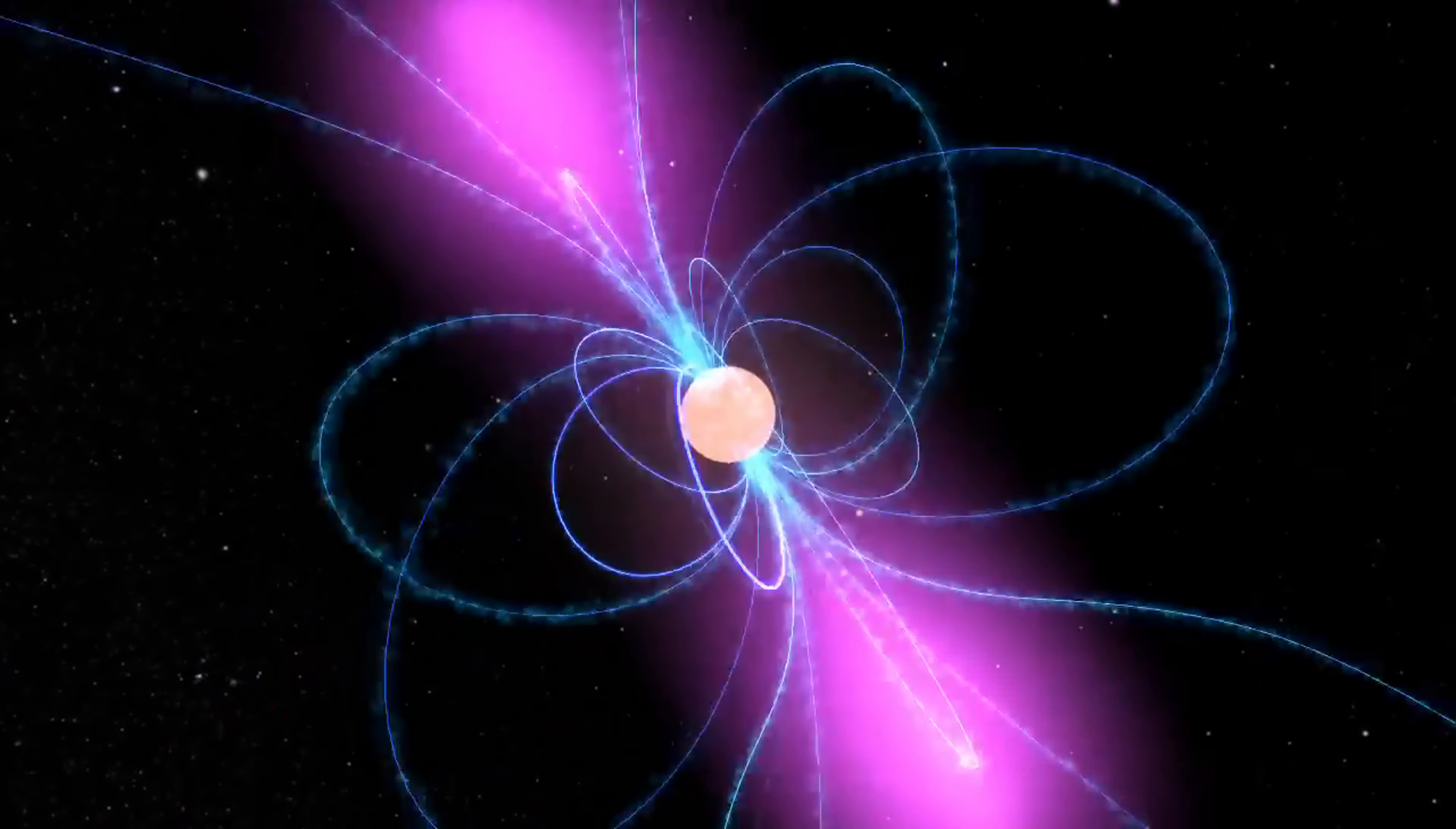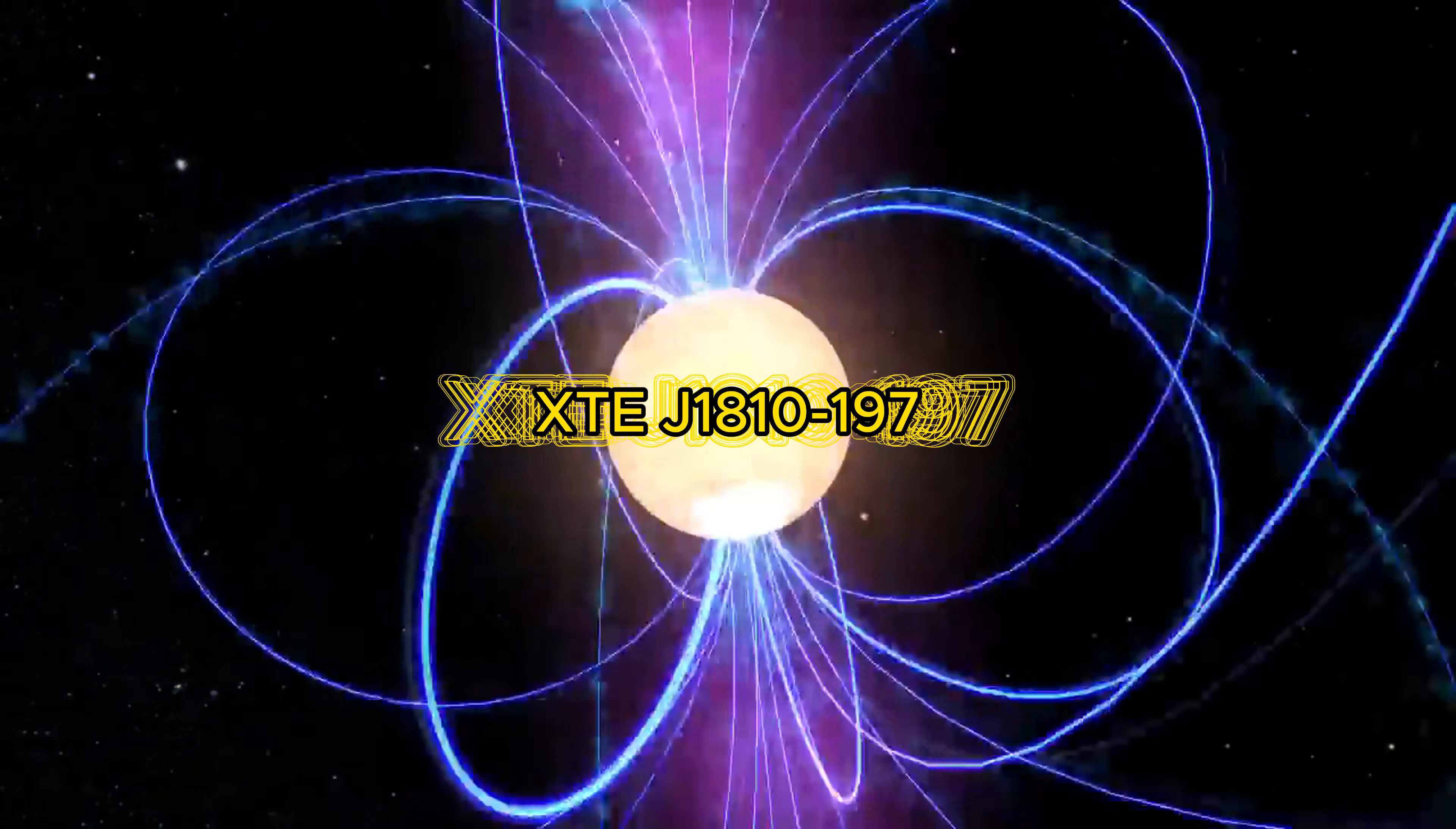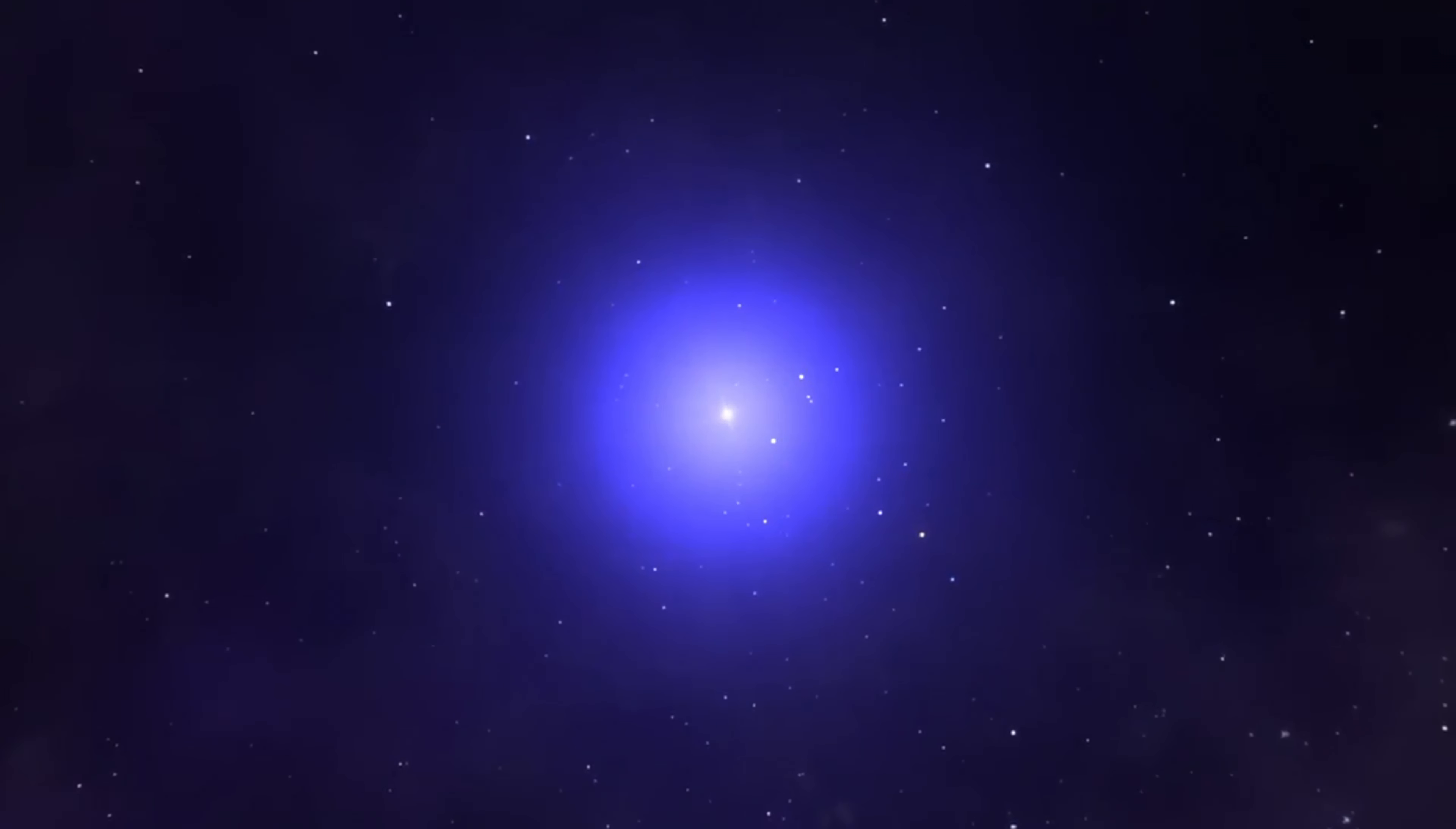The detection of radio wave pulses from magnetars is incredibly rare, with XTEJ 1810-197 being just one of only a handful of known magnetars to produce them. This celestial oddball, located around 8,000 light years away, was first seen emitting radio waves in 2003.